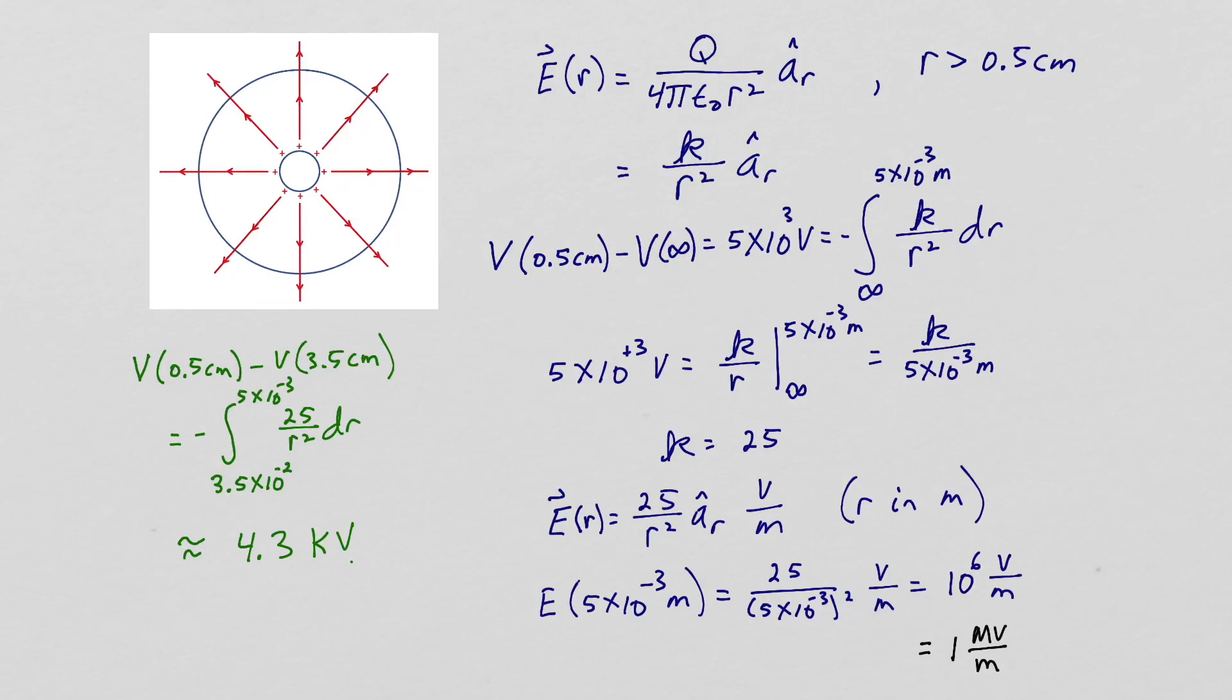The Tesla coil is oscillating around 33 to 35 kilohertz and it has an amplitude of 5,000 volts. Therefore the inner region is going to oscillate between plus and minus 5,000 volts.